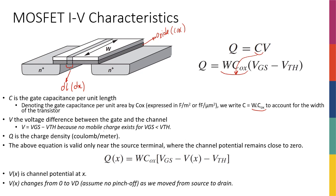I'm going to calculate the charge exactly at the source. Let's say this is source and this is drain. I'm calculating it right at the source. Why? Because I know exactly what the voltage difference is between the gate and that point — it's going to be VG minus VS. For any other point along my channel, the voltage is going to be somewhere between the source voltage and the drain voltage, so I don't know exactly what it is. But at the source, the voltage is going to be the source voltage.